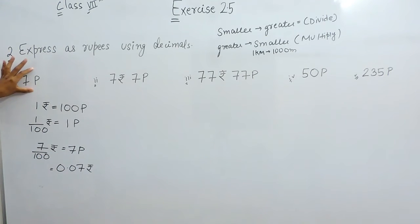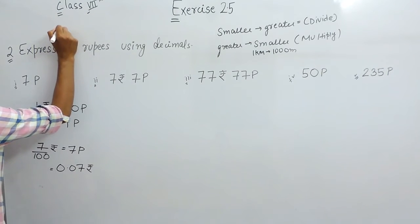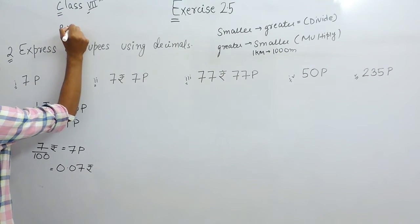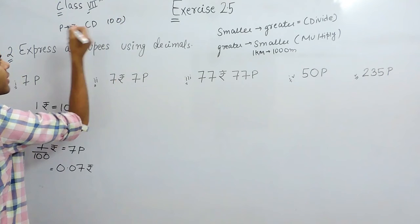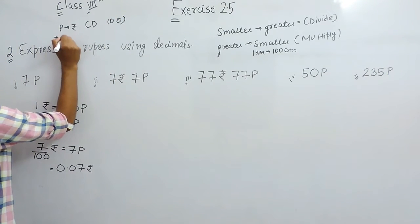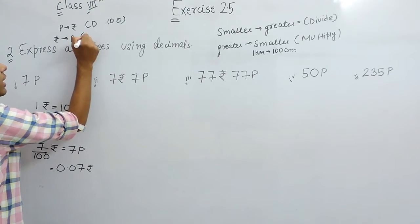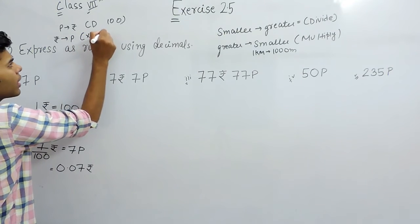It was in paisa and we have converted it in rupees, so we will divide it by 100. When paisa is converted into rupees, then divide by 100. And when rupees are to be converted in paisa, then we have to multiply with 100.